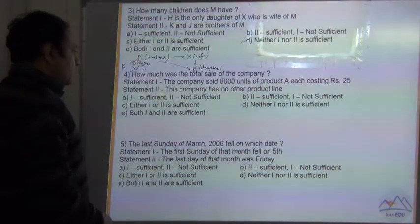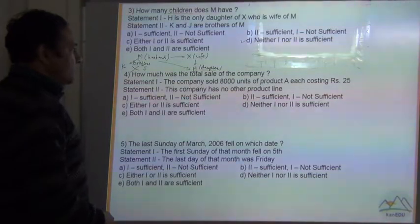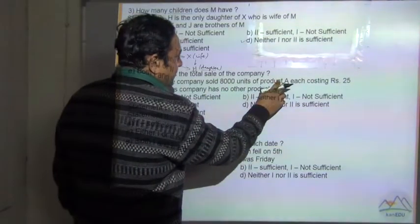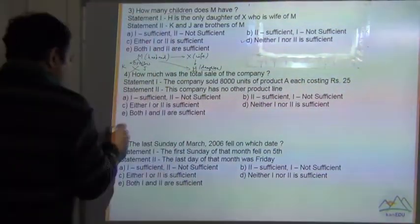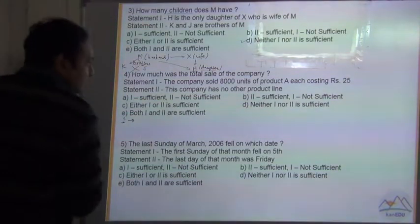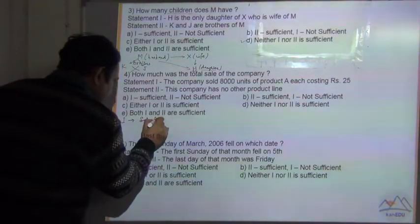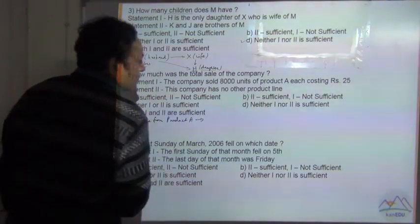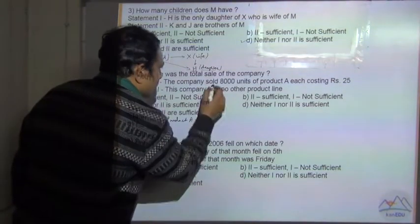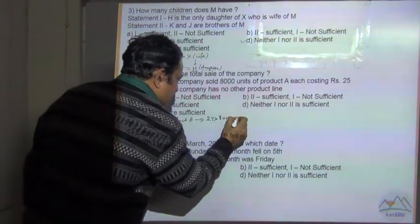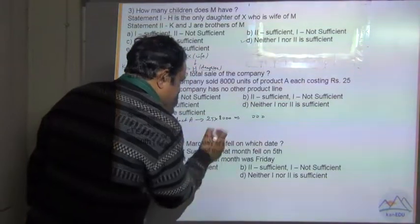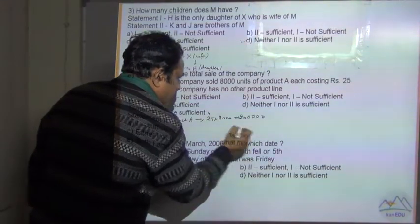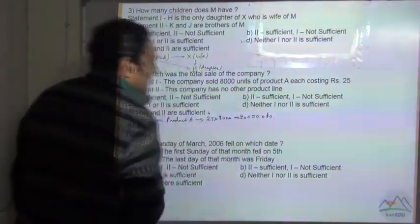Question number 4: How much was the total sale of the company? Statement 1 says the company sold 8000 units of product A each costing Rs. 25. As per statement 1, the sale from product A equals 25 each and total units are 8000. So this equals 8 times 25 is 200,000. This is the total sale of the company.